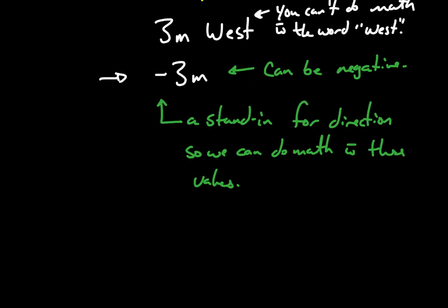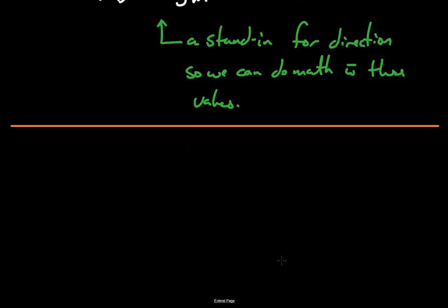What negatives stand for when you're talking about vectors is a stand-in for direction. A stand-in for direction so we can do math with these values. So it's key that you understand the difference between these two things. So move on a little bit. When we get to velocity and speed, we'll tackle those more in depth. Let's talk about changes in physics and how we write them.